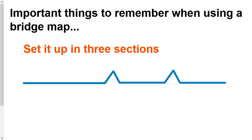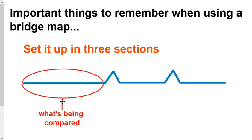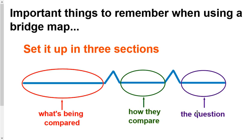Let's talk about bridge maps. There are some important things to remember when using a bridge map. First, you're going to set it up in three sections. Sometimes you can do more, but you're going to use at least three sections. The first section shows what you're comparing. The second section shows how those things compare to each other. The third section is where you put the question part of what you're trying to figure out.